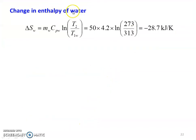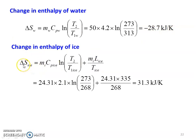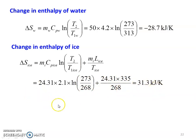Change in entropy of water: delta S_W = M_W × C_PW × ln(T2/T_W1) = 50 × 4.2 × ln(273/313) = −28.7 kJ per Kelvin. Entropy change of ice: delta S_ice = M_I × C_PI × ln(T2/T1_ice) + M_I × L / T1_ice = 24.31 × 2.1 × ln(273/268) + 24.31 × 335/268 = 31.3 kJ per Kelvin. These are the answers to the problem.